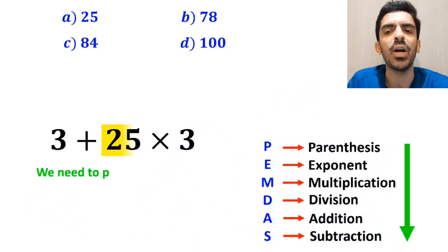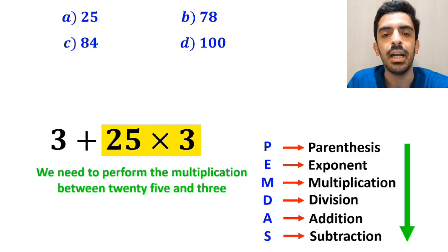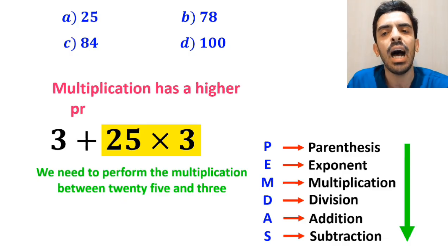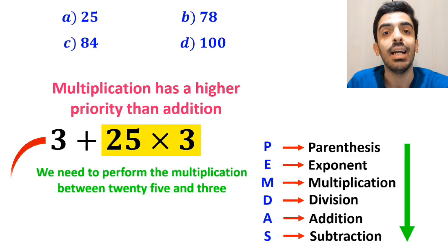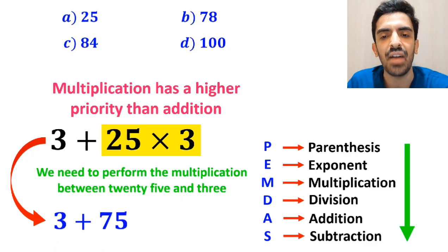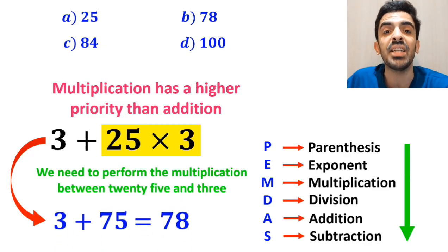Finally, we need to perform the multiplication between 25 and 3, because multiplication has a higher priority than addition. And this expression simplifies to 3 + 75, which ultimately gives us the answer 78.